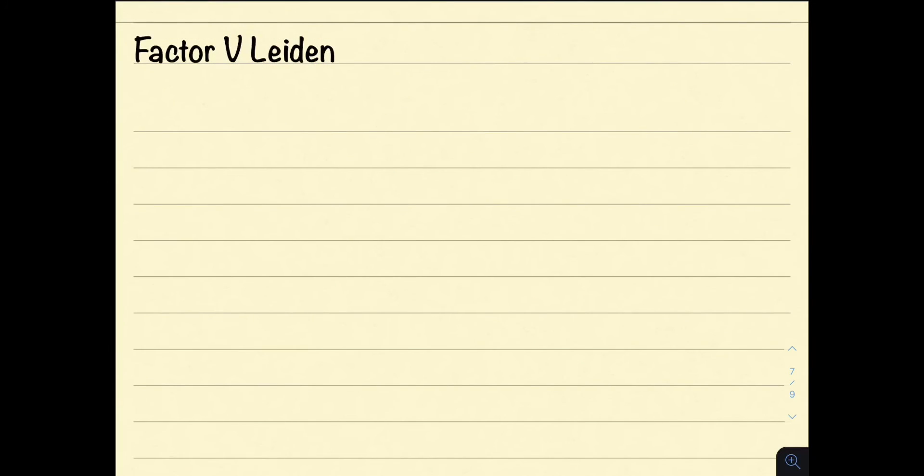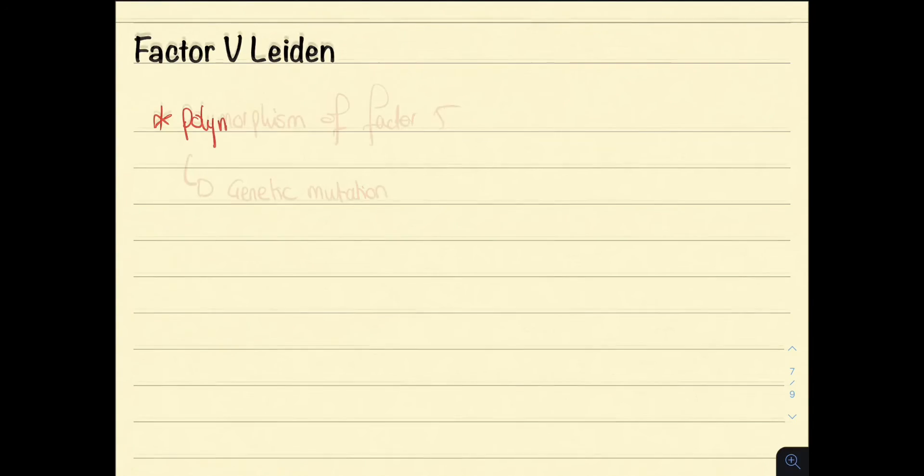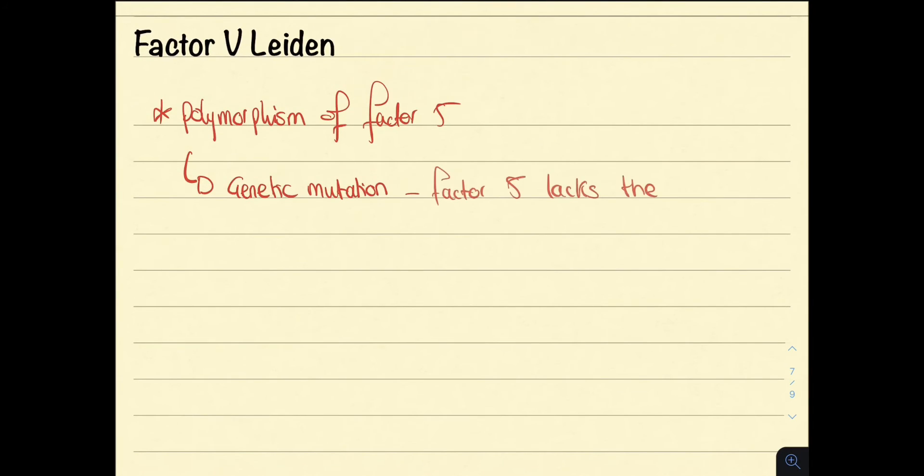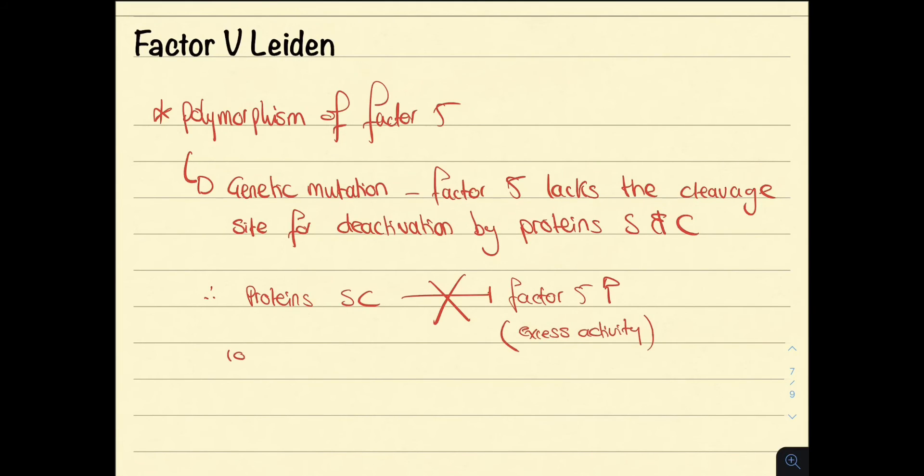Now onto factor V Leiden. This is a polymorphism of factor V, so it is a genetic mutation where factor V lacks the cleavage site for deactivation by proteins S and C. Remember these proteins usually inhibit factor V, and if they fail to do so, there will be excess activity of factor V.